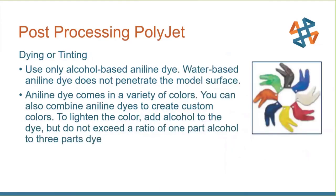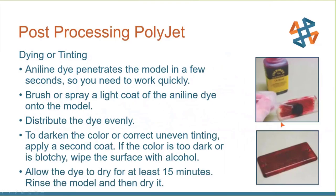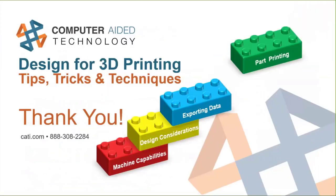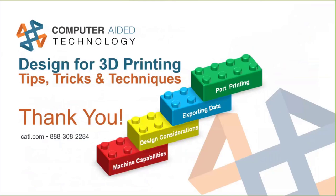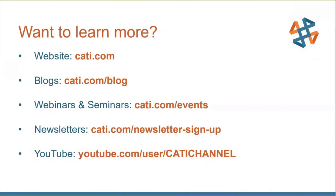You can dye and tint PolyJet parts using an alcohol-based aniline dye in a variety of colors. Don't exceed a ratio of 3 parts dye to 1 part alcohol. It penetrates in a few seconds. Use clear parts if you want to dye a special color and don't have a J series machine — the J series lets you mix colors on the fly for much better-looking color results. That covers everything in about an hour. You can rewind this video to review. For more information, check out our website — we do daily blogs on CAD and 3D printing, have webinars, seminars, a newsletter, and a YouTube channel.